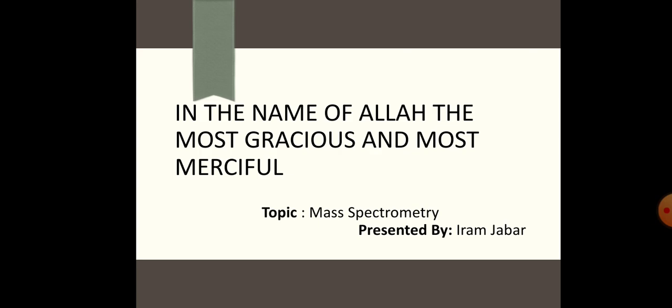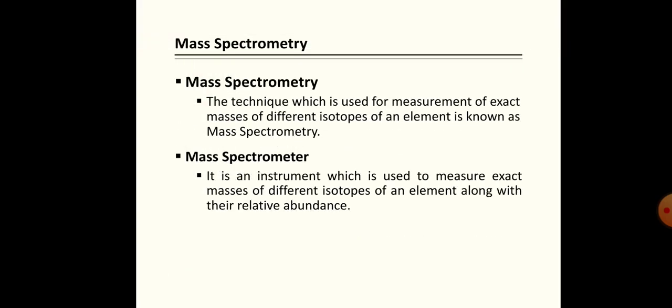In today's lecture we will discuss the method for measurement of mass of isotopes and relative abundance of isotopes. For this purpose we will discuss mass spectrometry. Mass spectrometry is a technique which is used for measurement of masses of isotopes of any element, and the instrument used for this is known as the mass spectrometer.